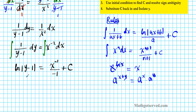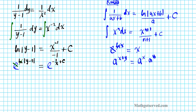Now to get rid of the ln, we use the exponential function — exponentiating both sides using E as the base. So we have E to the natural logarithm of the absolute value of Y minus 1 equals E to the quantity negative 1 over X plus C. Be careful: we are exponentiating the entire expression on the right, so the C must be included in the exponent. On the left side, the E and the LN cancel as inverse functions, leaving the absolute value of Y minus 1 equals E to the negative 1 over X plus C.